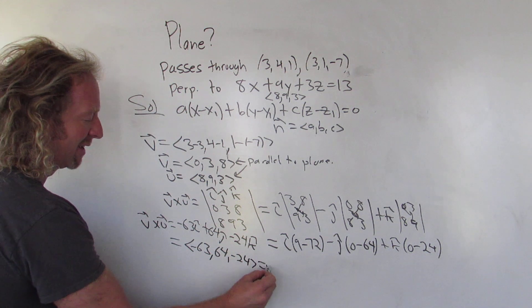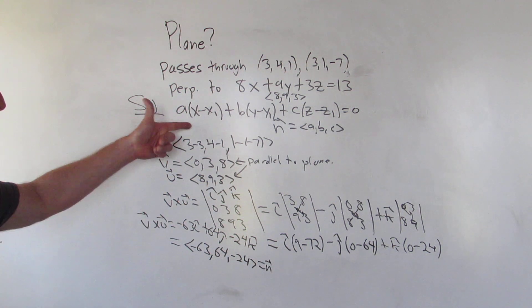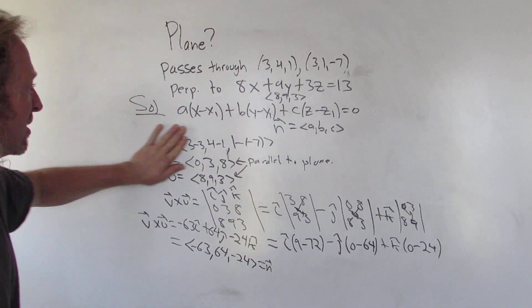No, it's not wrong. This is totally correct. So there is our normal vector. So negative 63, 64, and negative 24. Really, really big numbers. That's our n. So to finish, we'll just plug everything in here.